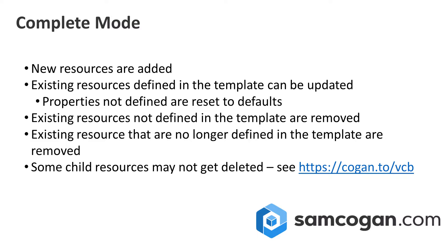That's a bit different to things that are not defined in your template. If you have a condition in your template that defines whether or not a resource is created, or a loop that defines how many of a resource are created, and you change the parameter that drives that condition from true to false, then ARM will look to delete that resource. Similarly, with a loop, if you had three resources created before and you change the value to two, it will look to delete the additional resource.